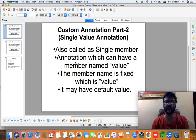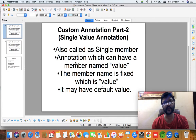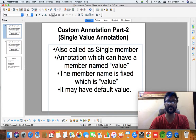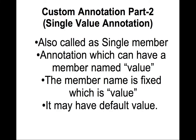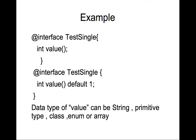Single value or single member annotation is a kind of annotation which will have one member, and that member is going to be called 'value'. So the member name is already predefined — it has to be 'value'. It can have a default value also, meaning if you do not supply any value to this annotation, then the default value will be available to that annotation.